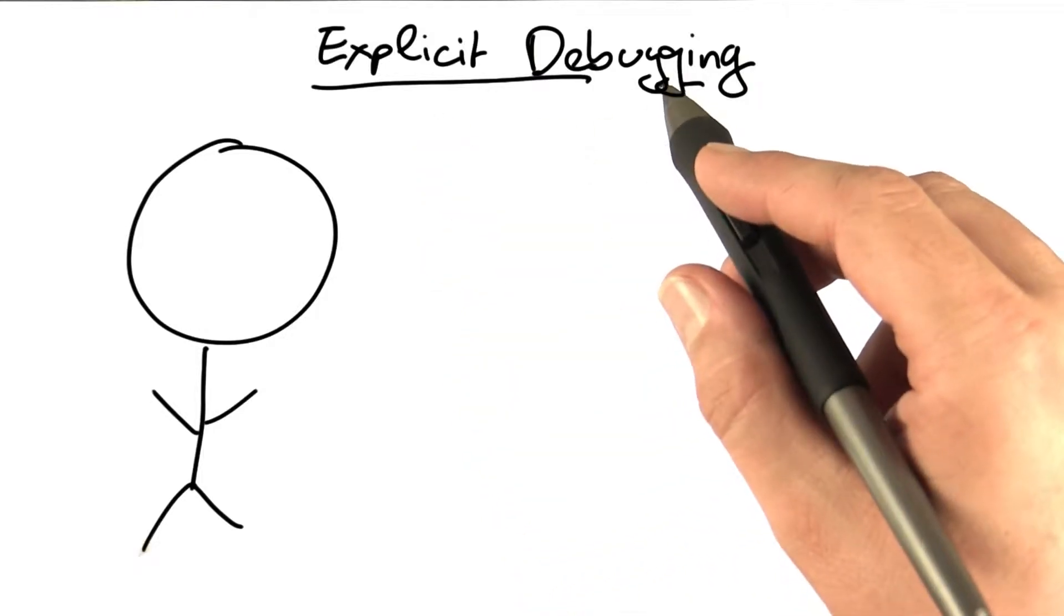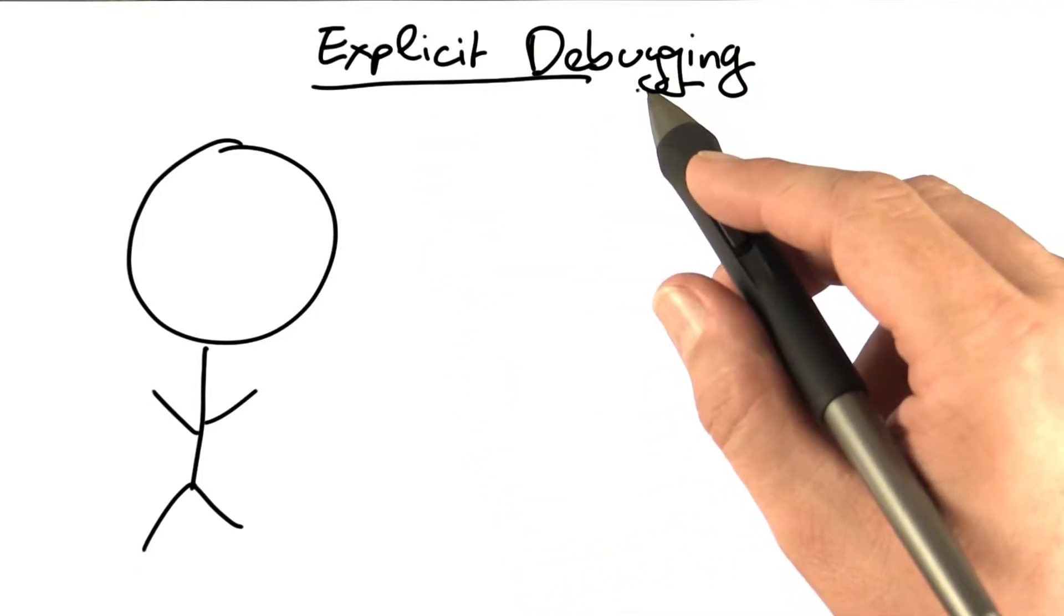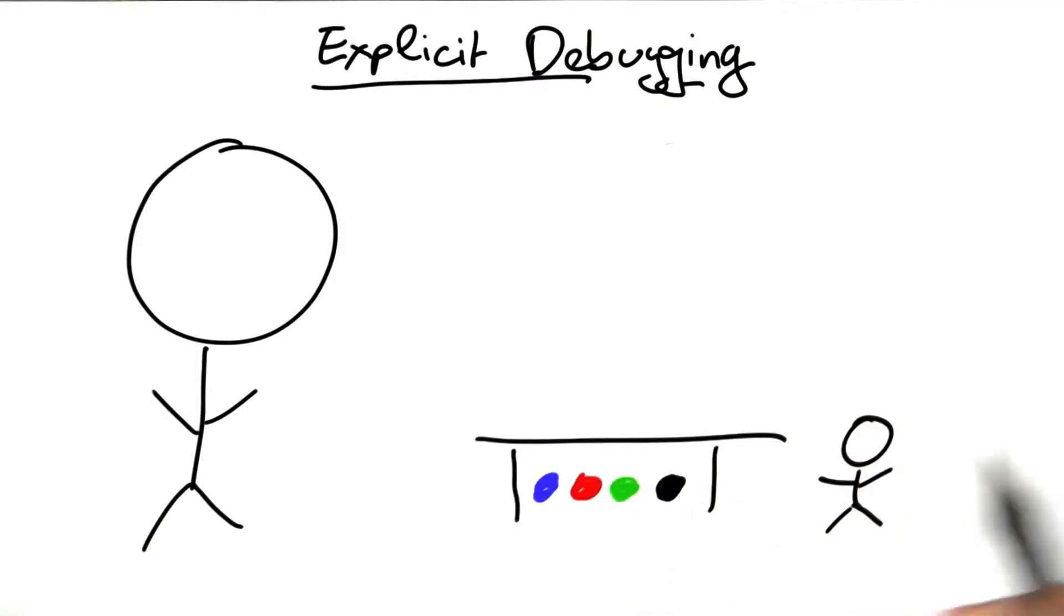To make another case for explicit debugging, let me illustrate this with the game of Mastermind. You know Mastermind, don't you?